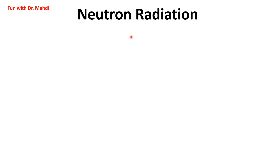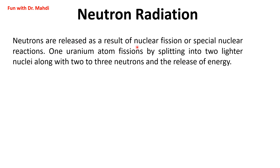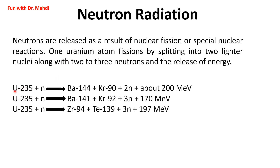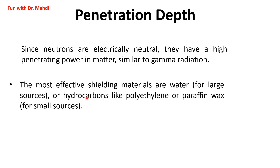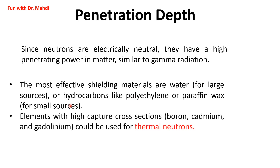Neutron radiation: neutrons are released as a result of nuclear fission or special nuclear reactions. As you can see in this picture, one uranium atom undergoes fission by splitting into two lighter nuclei, along with two or three neutrons and the release of energy. Since neutrons are electrically neutral, they have a high penetrating power in matter, similar to gamma radiation. The most effective shielding materials are water for large sources, or hydrocarbons like polyethylene or paraffin wax for small sources. Elements with high capture cross sections like boron, cadmium, or gadolinium can be used for thermal neutrons.